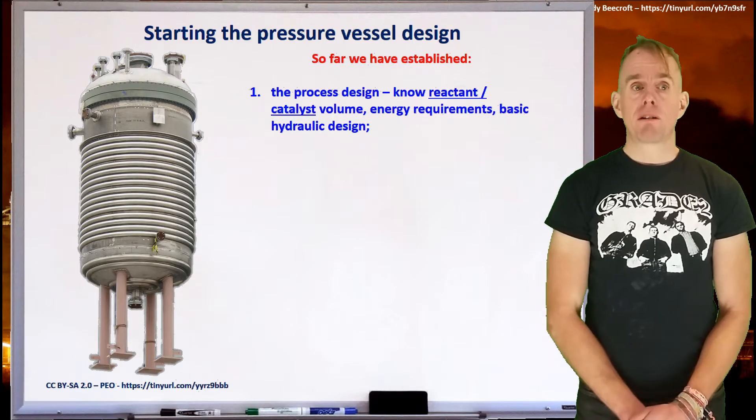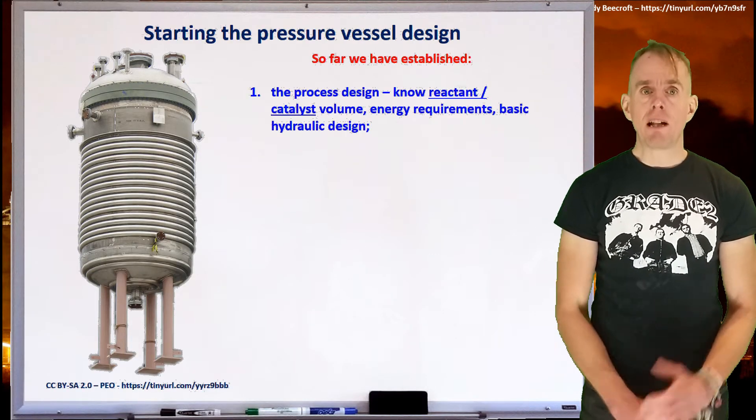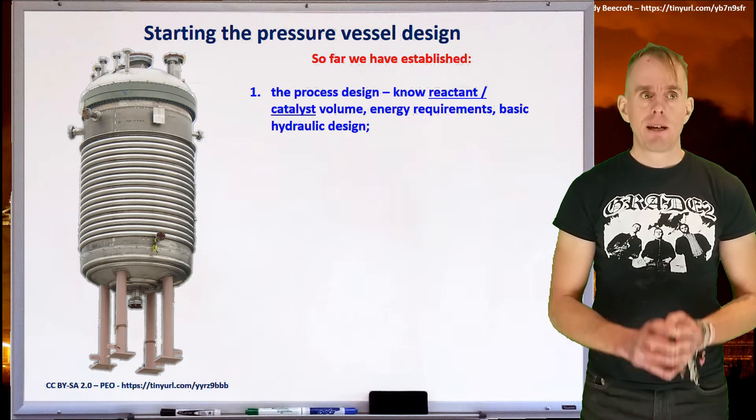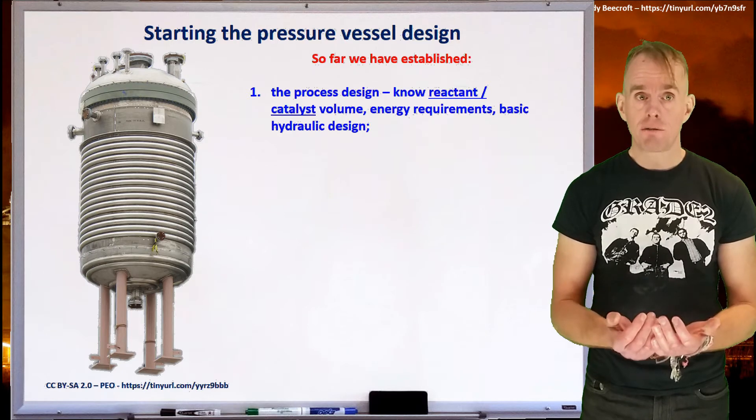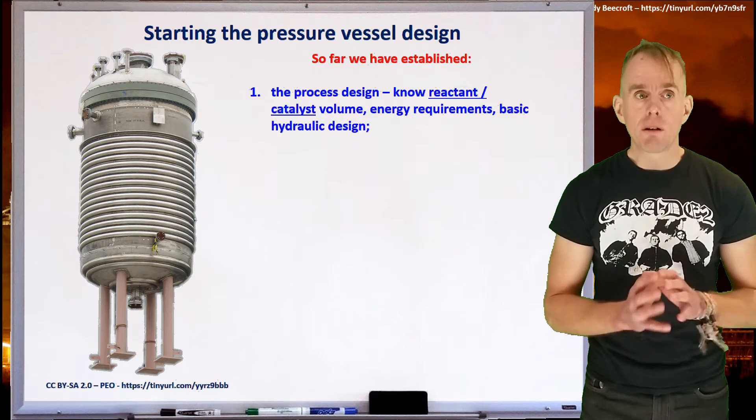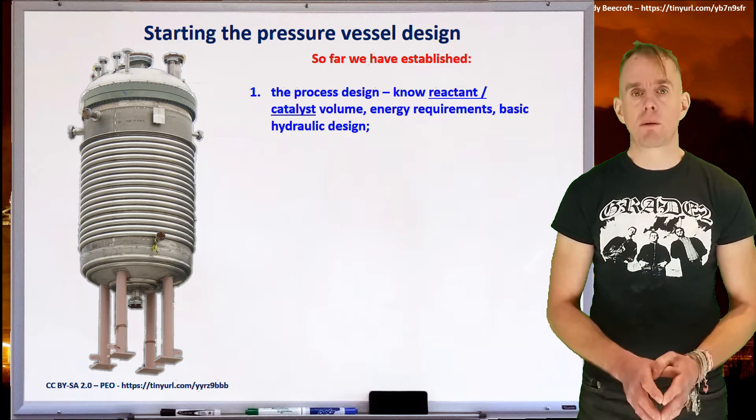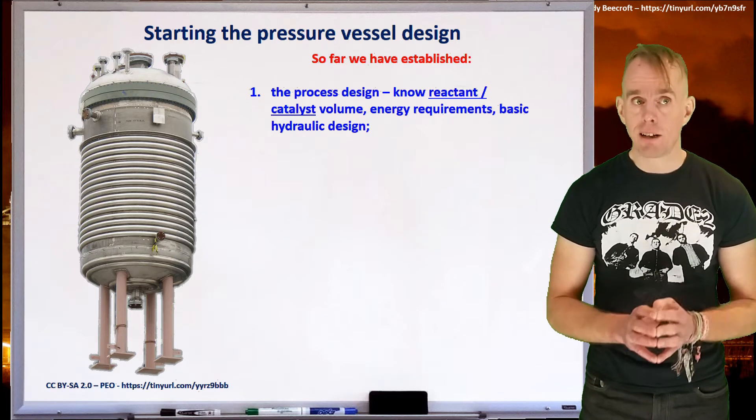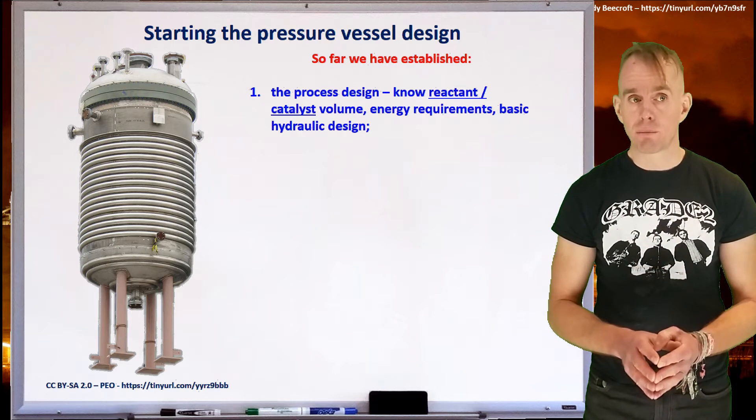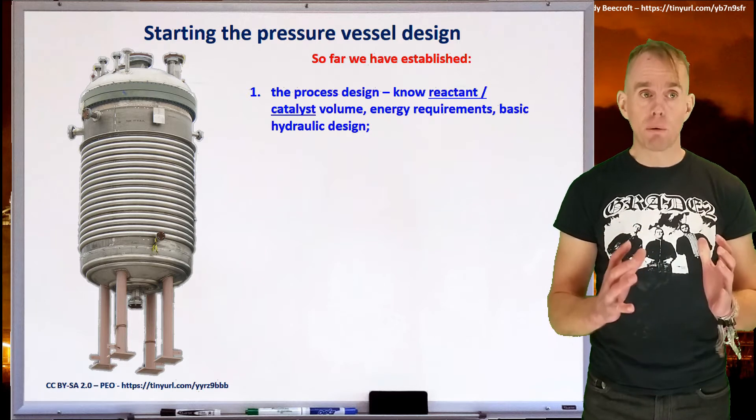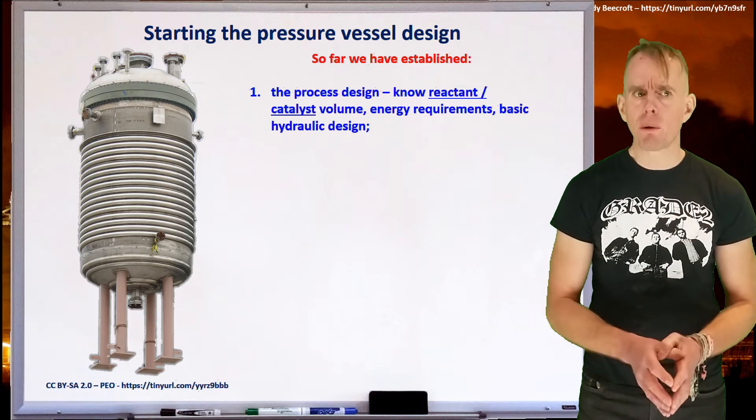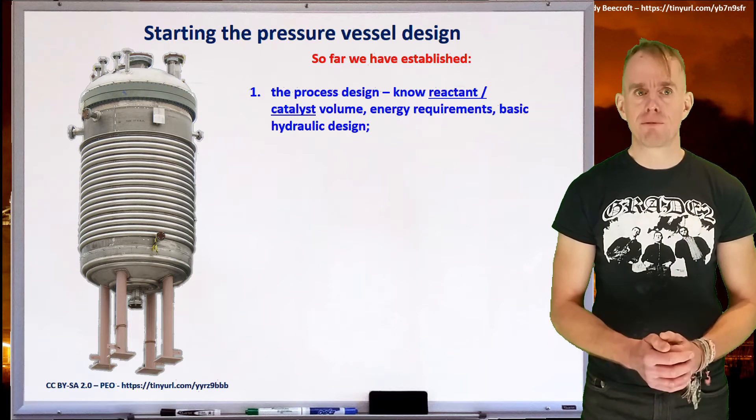So here on the whiteboard is a photograph of a reactor pressure vessel. Let's just look at it for a second to see what we're aiming for. The vessel has an external heating coil around it, so it's got heat transfer equipment that's not part of the reactor volume. It's got lots and lots of flanges. Now these flanges will connect to the process, they'll connect to instruments, they'll connect to vents, they'll connect to drains, they'll connect to nitrogen systems. The vessel's got supports. We can actually stand it up without it falling over.